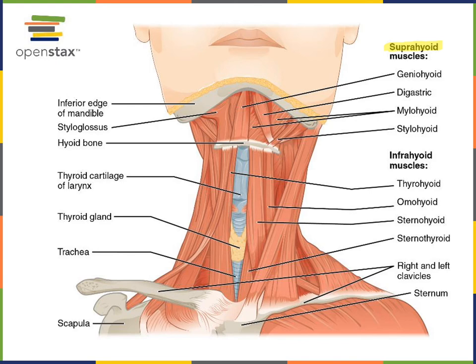In addition to elevating the hyoid bone and the larynx, the geniohyoid, digastric, and mylohyoid also have the action of depressing the mandible to open the jaw.